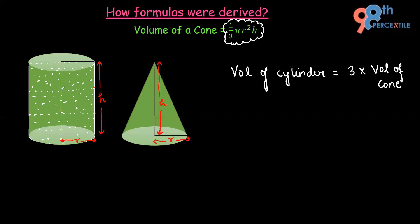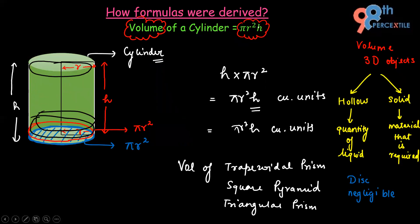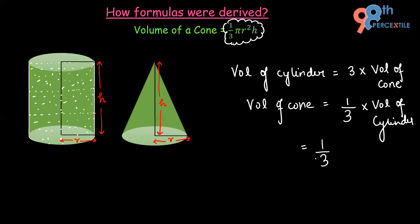We had to do this activity three times to fill the cylinder, so the cylinder carries three times the content of the cone. This means the volume of the cone is one third the volume of the cylinder. Since from the previous video the volume of a cylinder is π r² h, the volume of a cone is one third of π r² h cubic units.